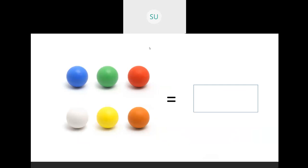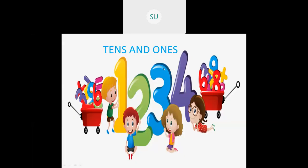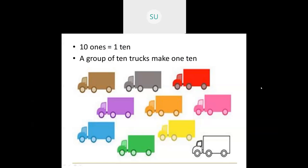So let's see the numbers from 10 to 99 now. First we'll study numbers from 10 to 19 using tens and ones. Let's see what is the meaning of tens and ones. Numbers from 1 to 9 are called ones — that is a place value. Ones is a place value. 10 ones together make one 10.